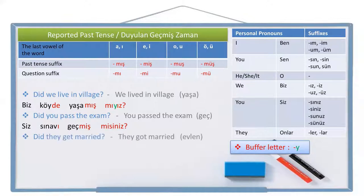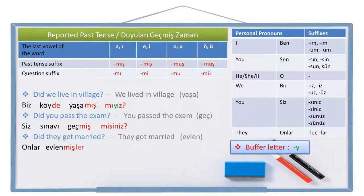Let's write one last positive example. Did they get married? The positive sentence is: they got married. Get married is 'evlen' in Turkish. Person pronoun they is 'onlar', get married is 'evlen', got married is 'evlenmiş'. Be careful for 'they': we write the personal pronoun suffix after the tense suffix, and then the question suffix to the end. Onlar evlenmişler mi? Did they get married? Positive question sentences are like this.